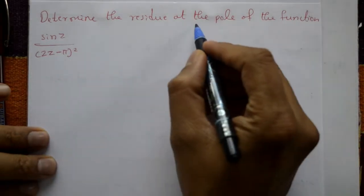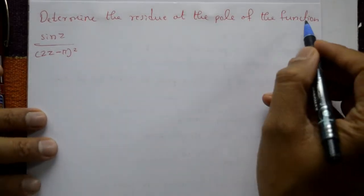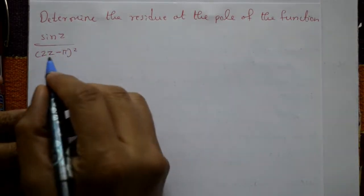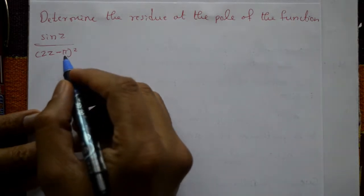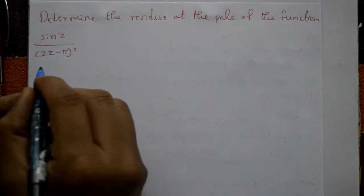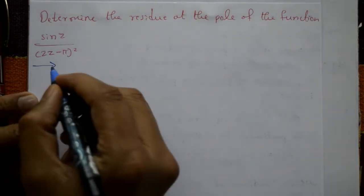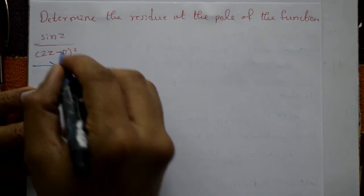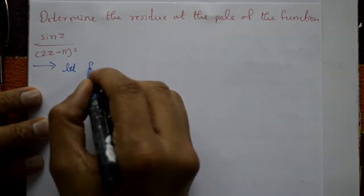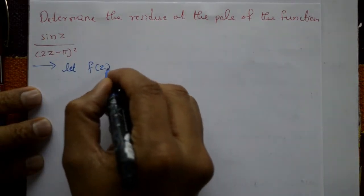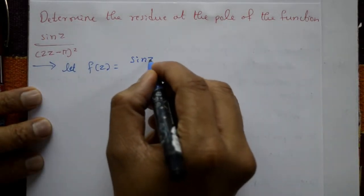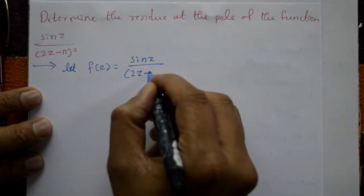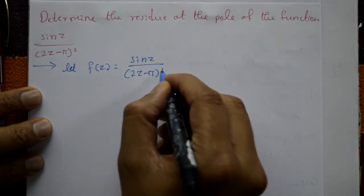Determine the residue at the pole of the function sin z upon (2z minus pi) whole square. Now solution. Given: f(z) = sin z / (2z - π)².